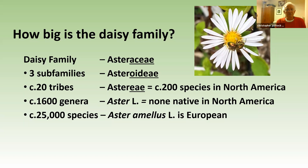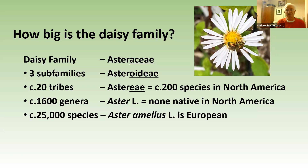There are four or five families that get into the range of 25,000 species or more, so it's a big family. Within the families of plants, any family name always ends with -aceae. This is one where we have a variation — it's called Compositae, so Compositae is another name for the Asteraceae, and you might also see it called the daisy family in some books.